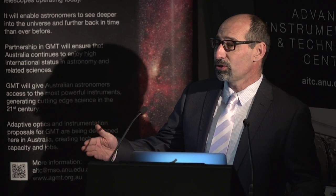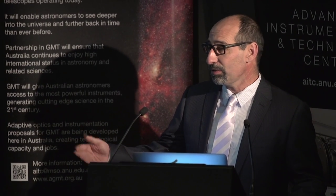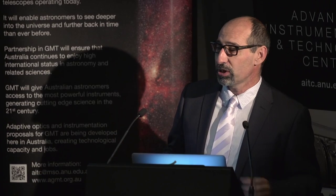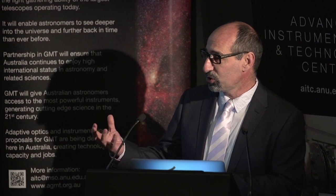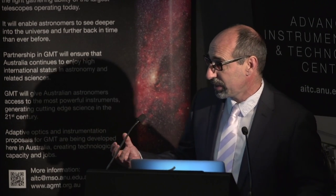Chris has been talking about the telescope itself and the science, John has been talking about the instrument that receives the light, and I'm going to be talking about something which is in between, called adaptive optics. Adaptive optics is a kind of instrument that processes the light, cleans it, so that the instrument can actually take advantage of the full optical resolution of the telescope.